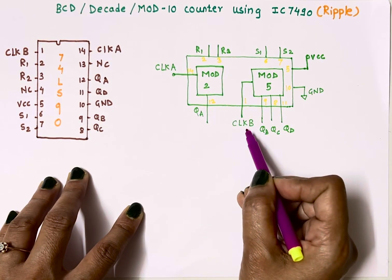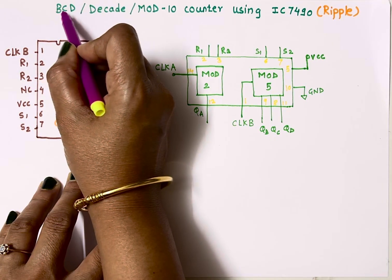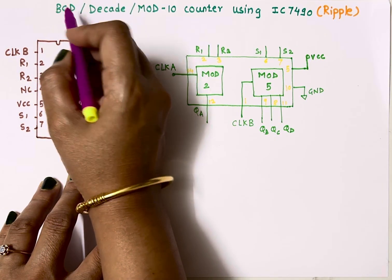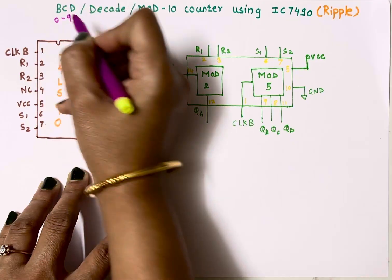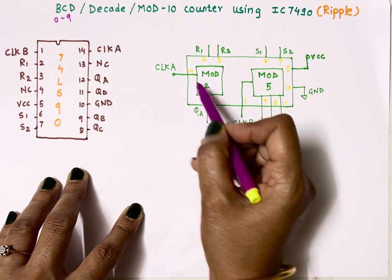It has two sections: mod-2 section and mod-5 section. Clock A is input to mod-2 section and clock B is input to mod-5 section. This is BCD counter. BCD means binary coded decimal.